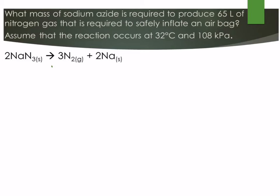So we want to be able to make 65 liters and we want to know how many grams of our sodium azide. If we write down the rest of our given information we have 32 degrees Celsius, we're adding 273 to that. So we get 305 degrees Kelvin and our pressure is 108 kilopascals.